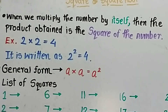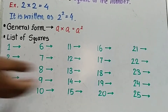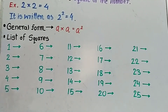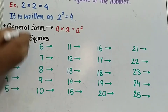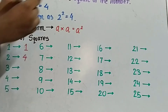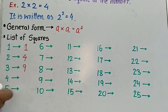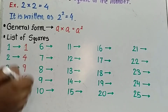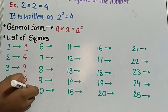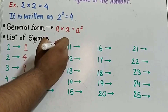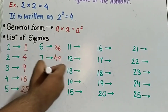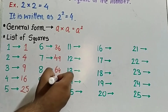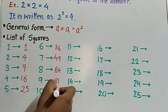So there is a list of squares from 1 to 25 that should be known and remembered. The square of 1 is 1, square of 2 is 4, square of 3 is 9, square of 4 is 16, square of 5 is 25, square of 6 is 36, square of 7 is 49, square of 8 is 64, square of 9 is 81, square of 10 is 100.